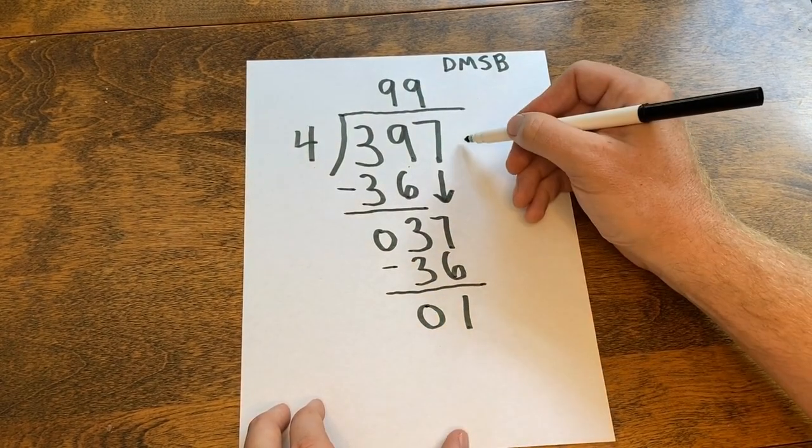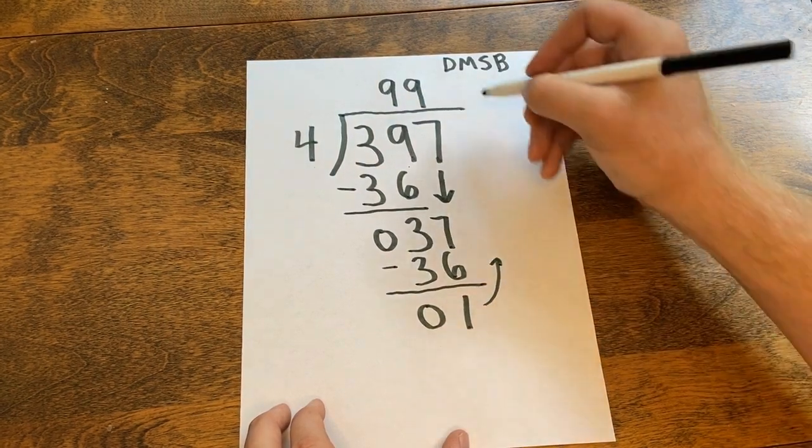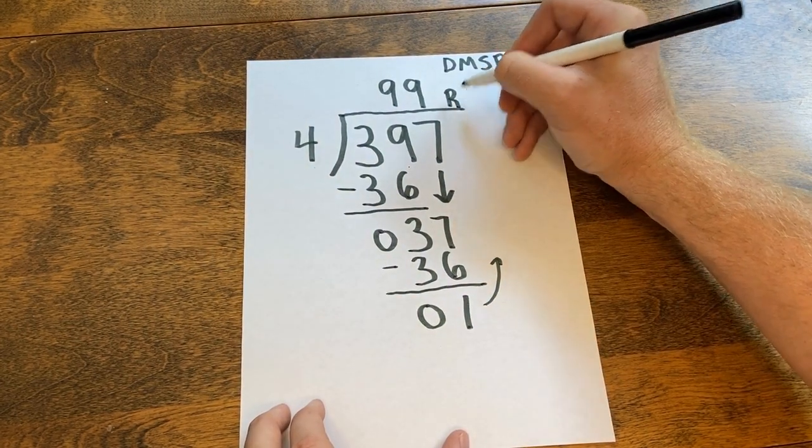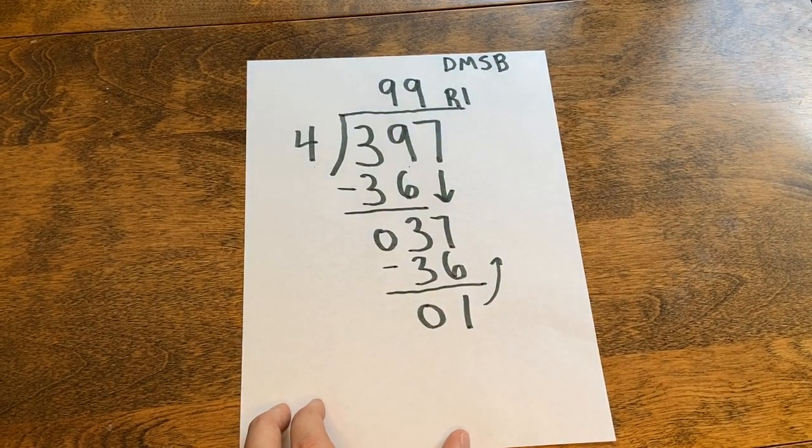And now there's nothing left to bring down, so the 1 comes up as my remainder. So my quotient is 99 remainder 1.